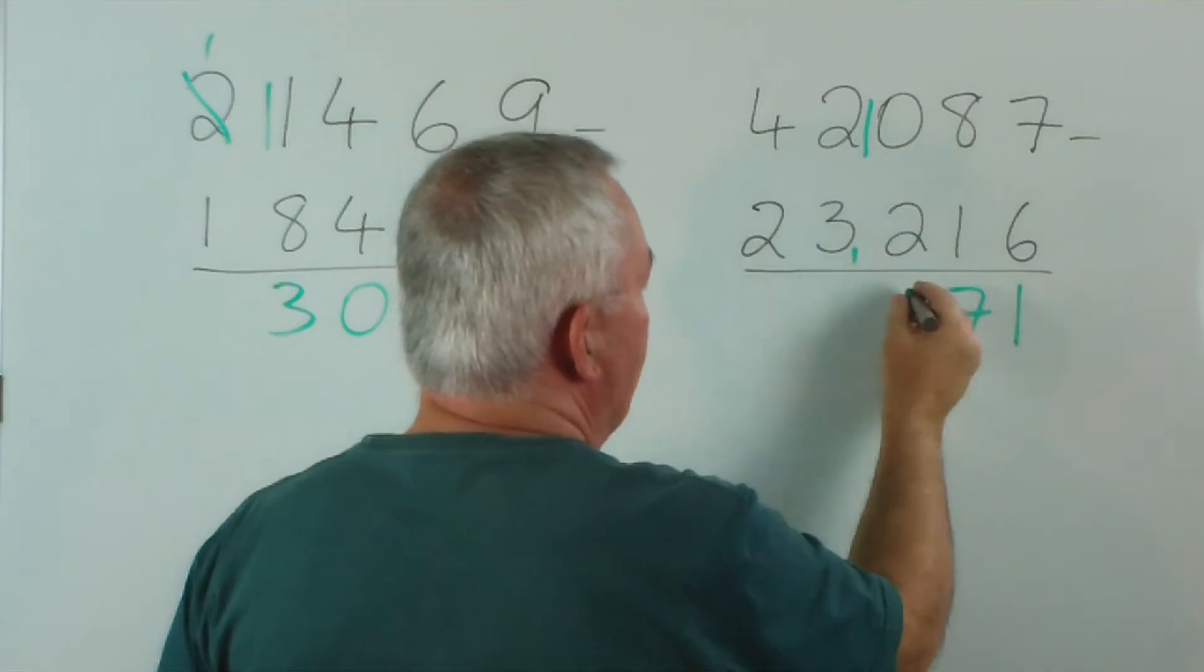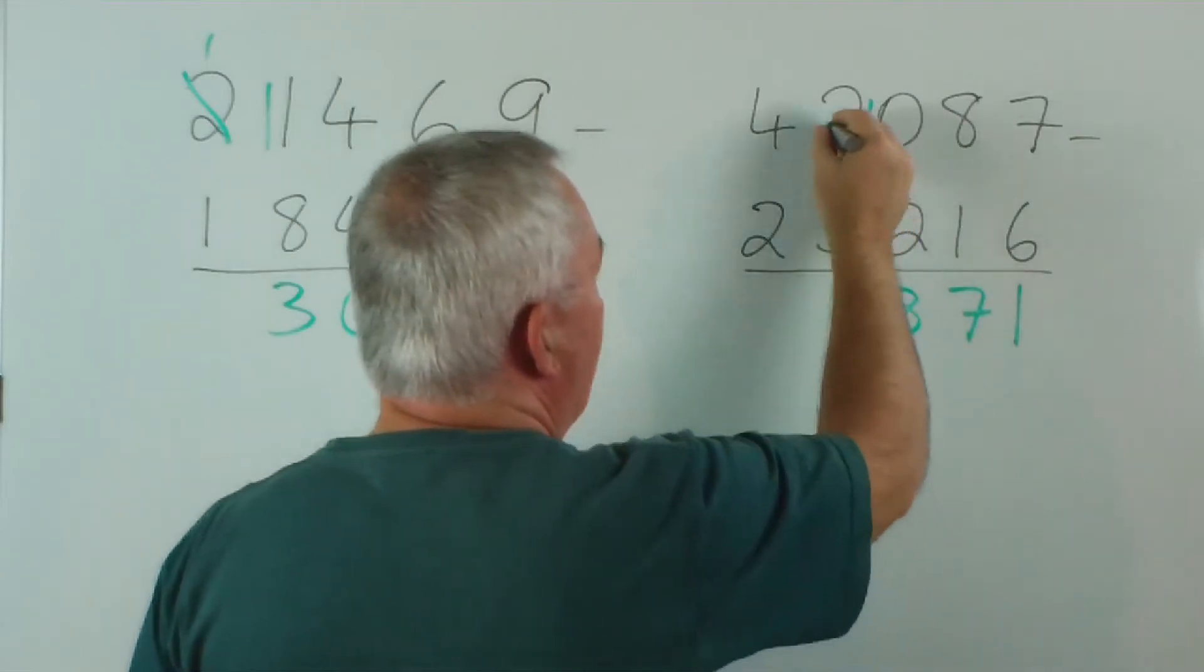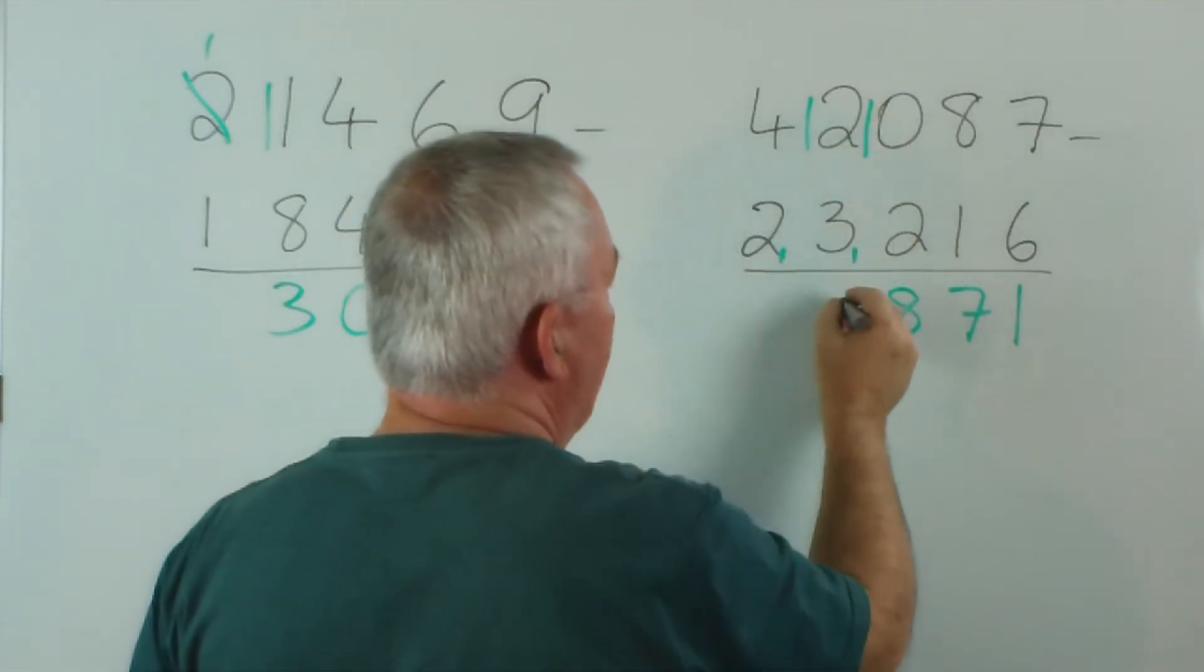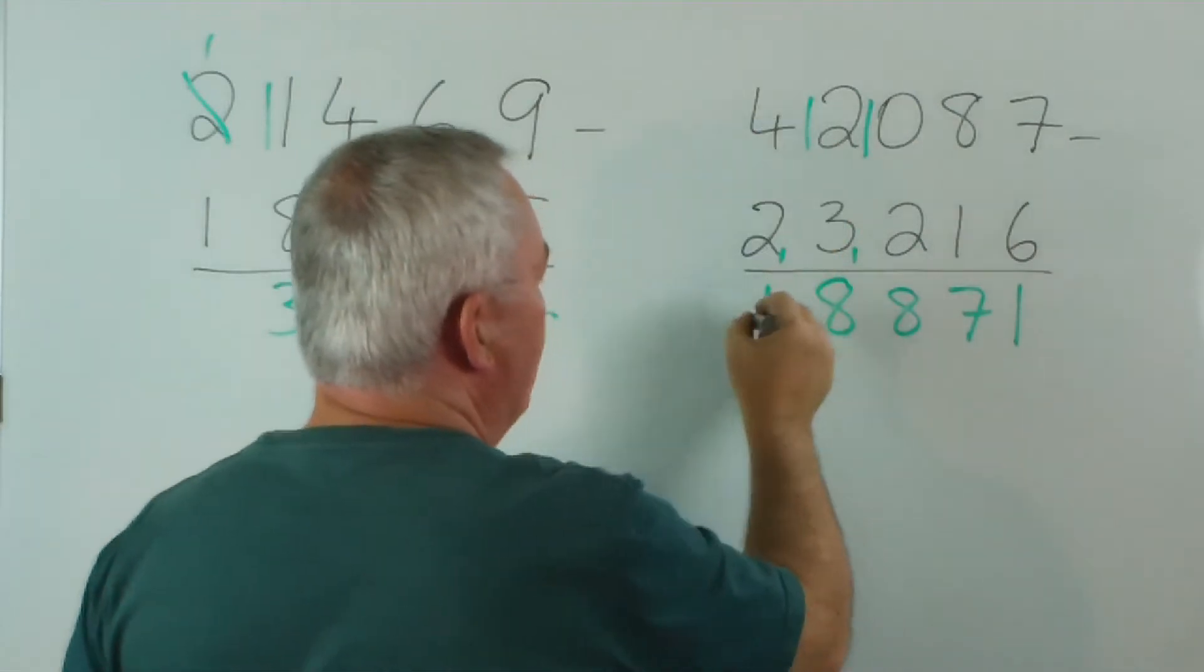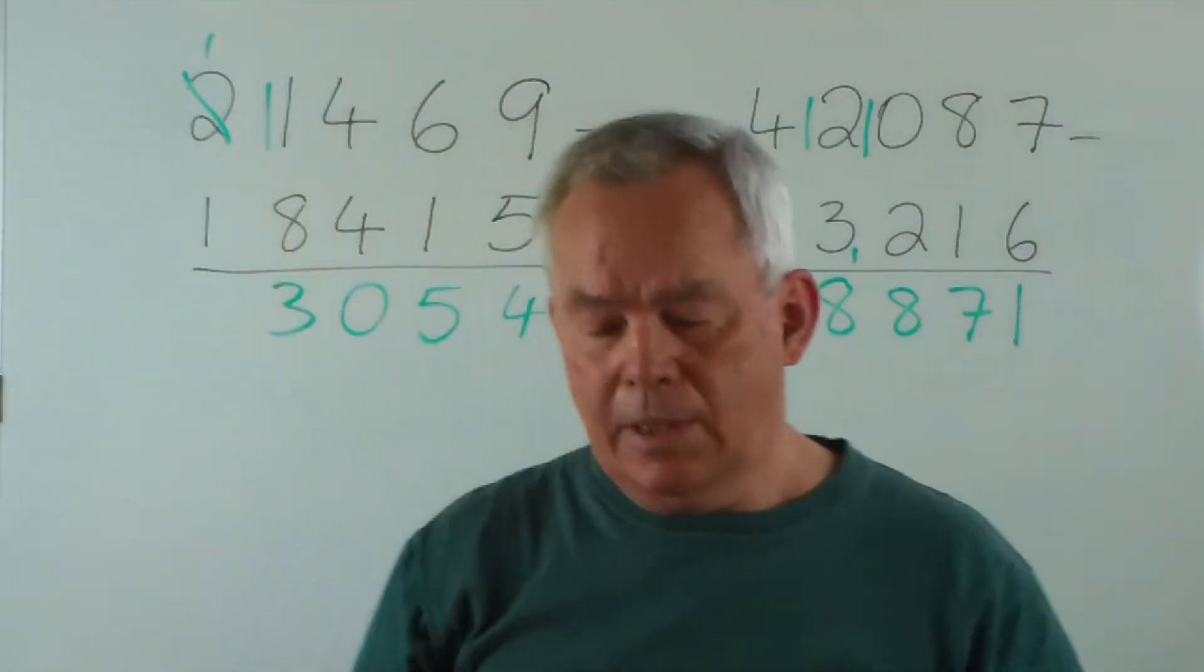10 minus 2 is 8. We now have 4 from 2, so 4 from 12 is 8, and 3 from 4 is 1. So, quite different methods.